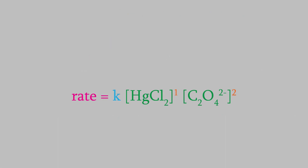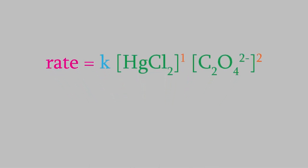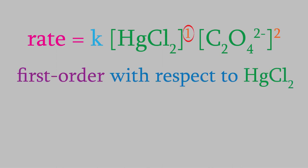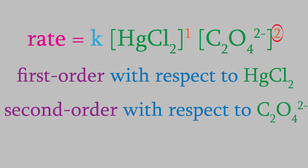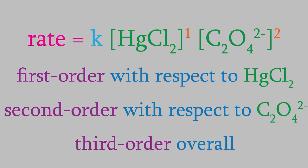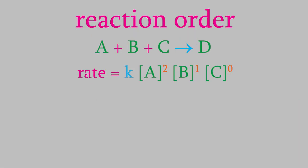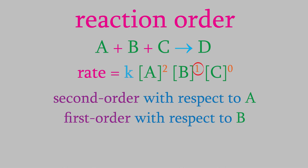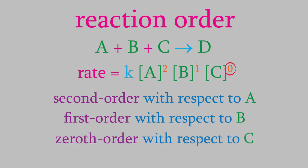There's one more very important thing to know about the rate law. As we'll see in the next few videos, the exponents in the rate law are especially useful bits of information. The exponents are called the reaction order. For example, in the reaction we just looked at, we found out that the reaction is first order with respect to mercury chloride, and second order with respect to oxalate. Also, if we add the exponents together, we get what's called the overall reaction order, so this reaction is third order overall. In the generic reaction we looked at earlier, the reaction is second order with respect to A, first order with respect to B, and zeroth order with respect to C — making it third order overall.